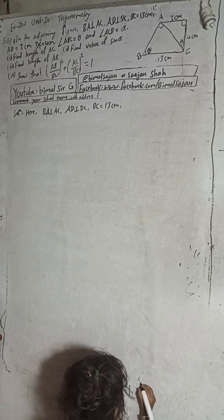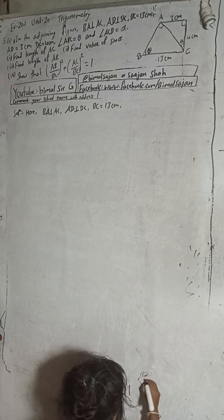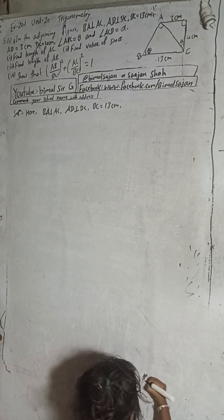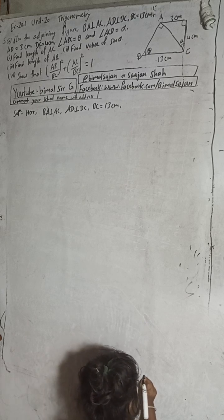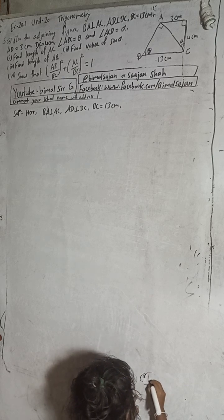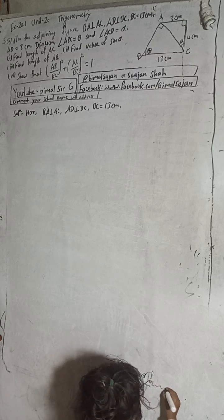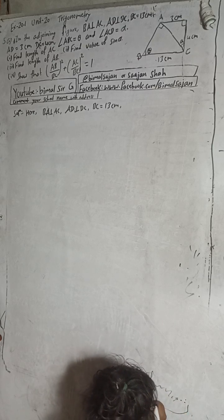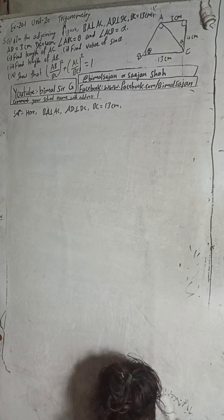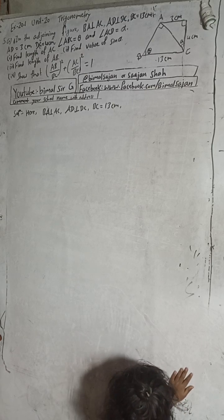Hi class 9 and 10 students, welcome back to Bimal Sarji YouTube channel. This is question number 5A, exercise 20.1, unit 20, trigonometry, compulsory maths. In the playlist of Bimal Sarji YouTube channel you will find class 9 and 10 solutions of optional maths, compulsory maths, and science both of class 9 and 10, so don't forget to check the playlist.